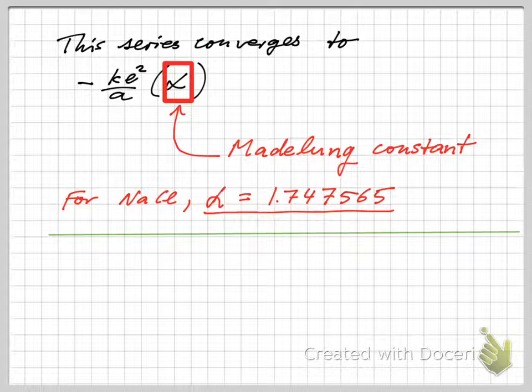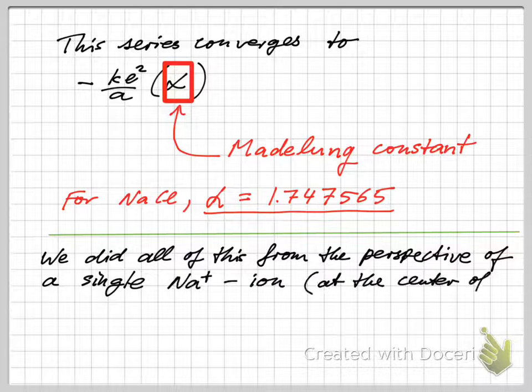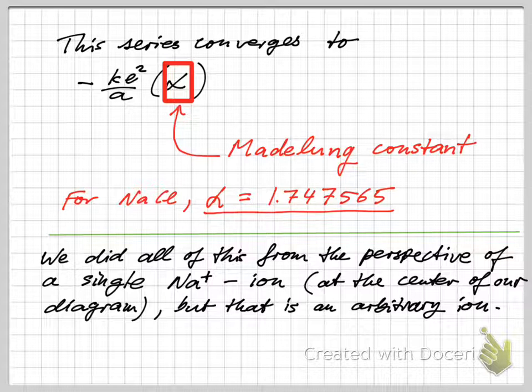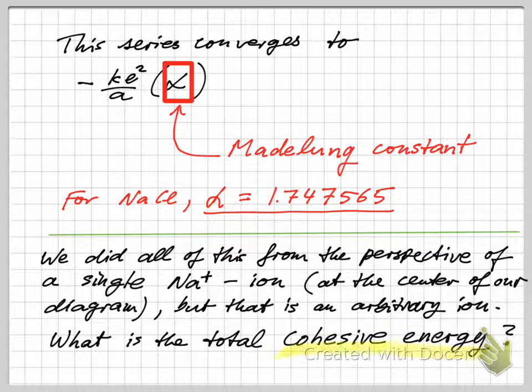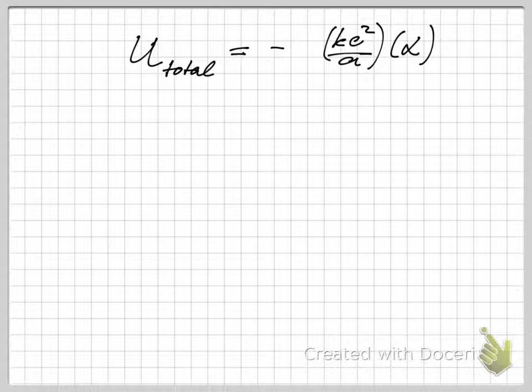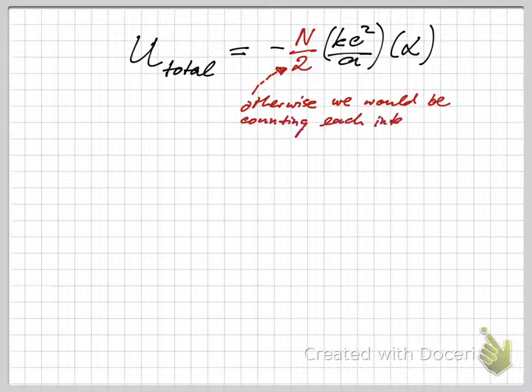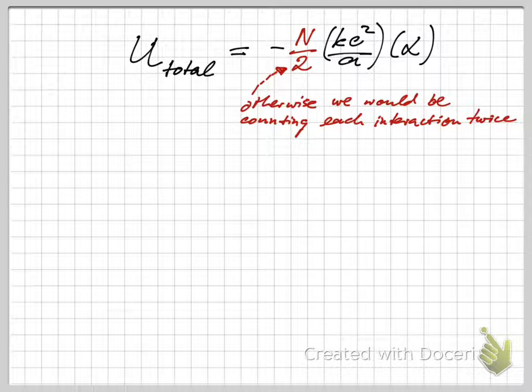We did all this from the perspective of a single sodium ion at the center of our diagram, but of course that ion was arbitrarily chosen. It's an arbitrary ion, and so now we have to repeat it for all the other ions. What is the total cohesive energy of the crystal? We have that result from before, and we might think we need to multiply by n, and that's true because we have n ions in the crystal, but we also then need to divide by two so that we don't overcount, because each pair should only be counted once.